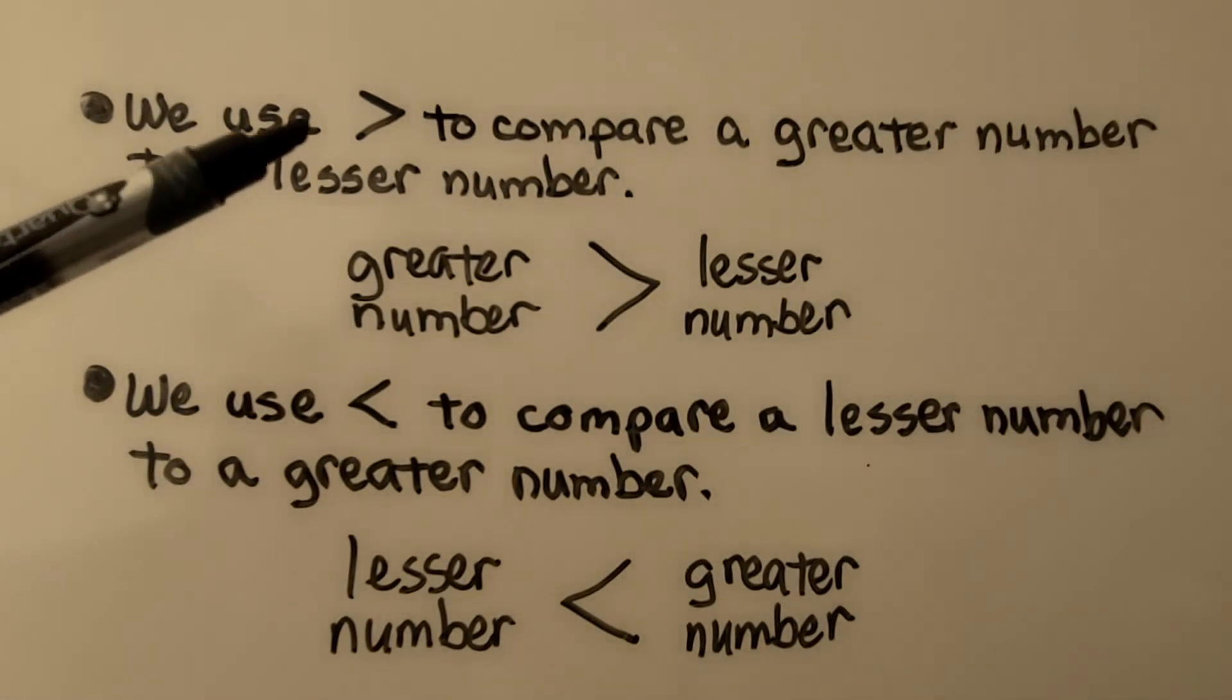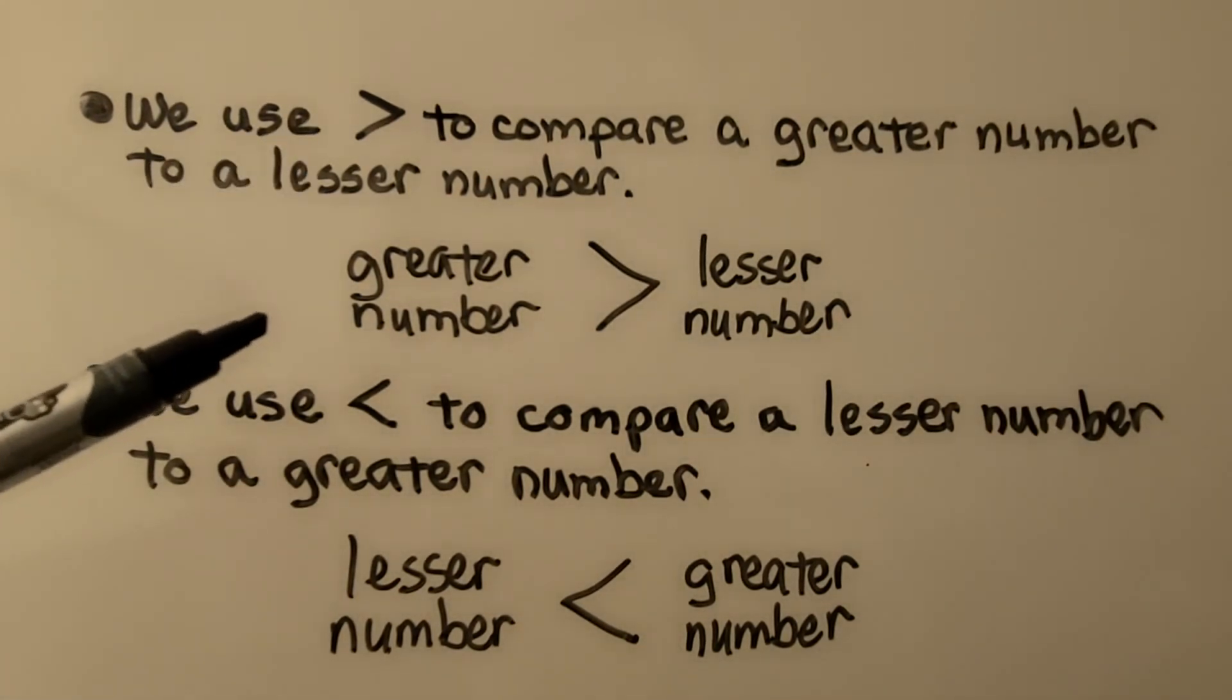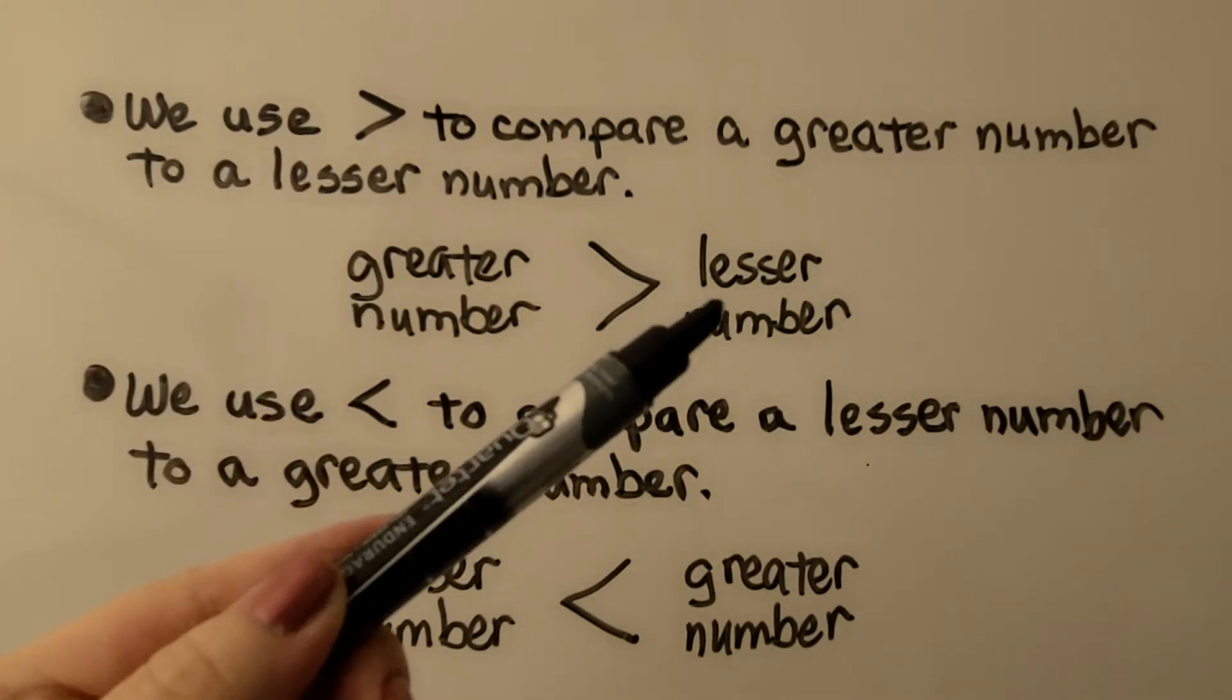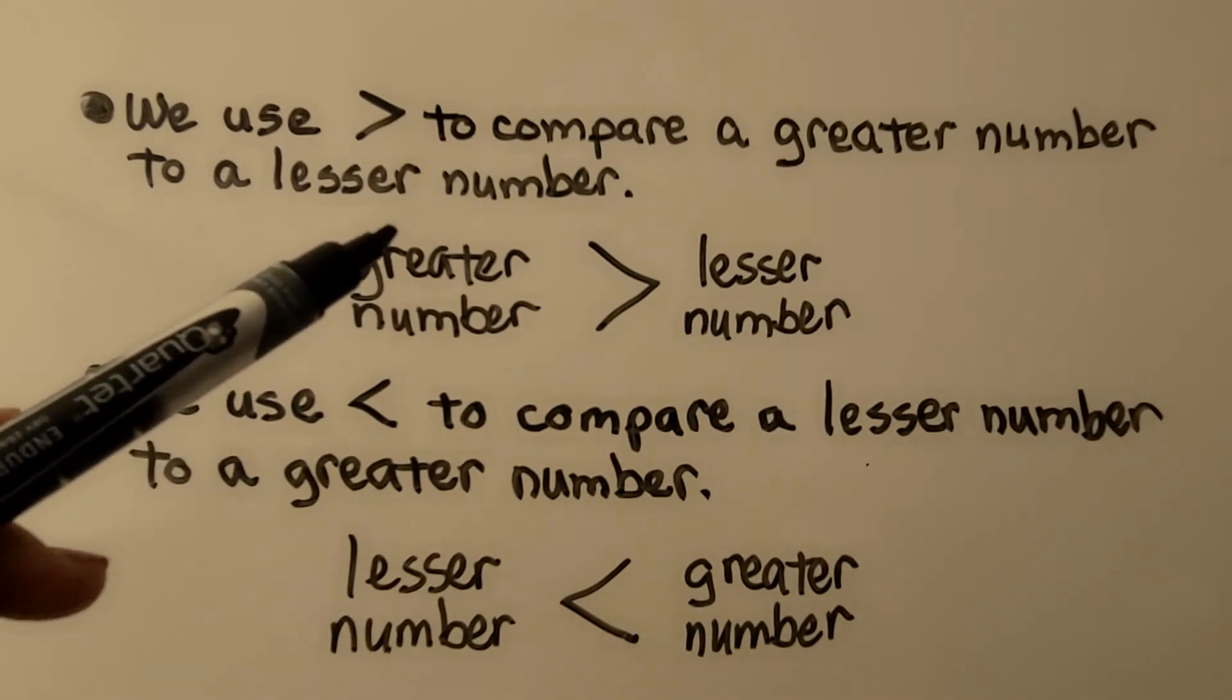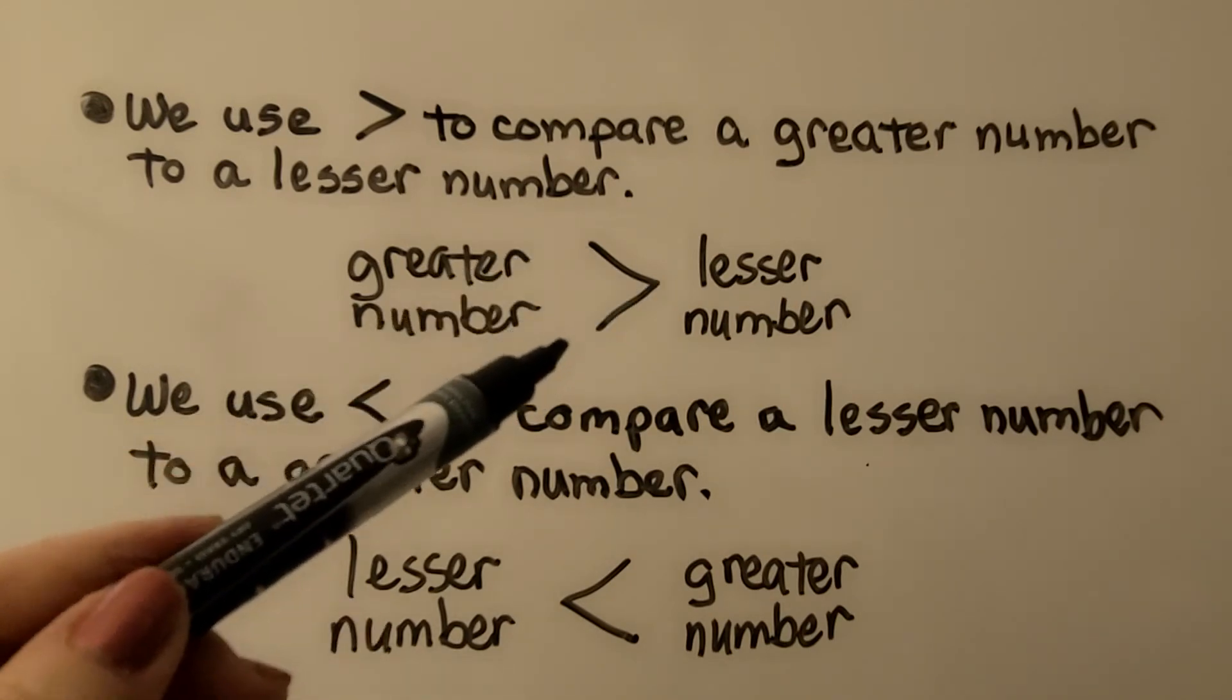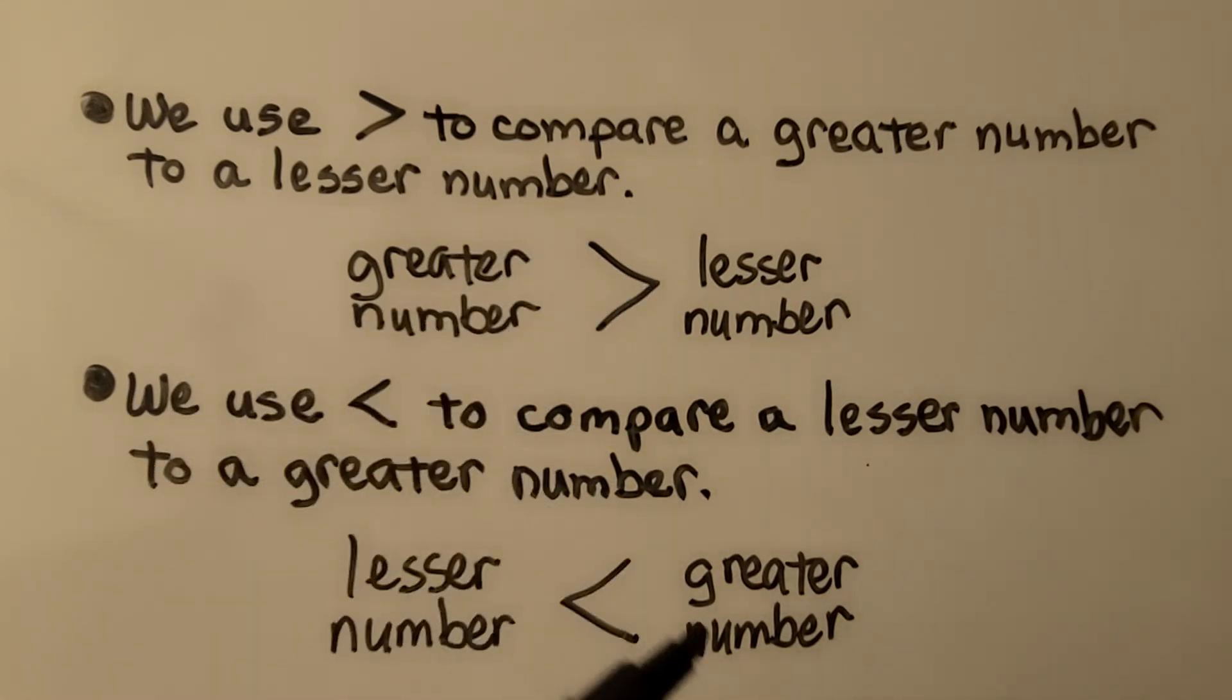We use the is greater than symbol to compare a greater number to a lesser number. We use an is less than symbol to compare a lesser number to a greater number. So if you look, the greater number is over here and we've got the greater than symbol. Now that the greater number is over here, our symbol flipped. We traded places with the numbers and our sign flipped the other direction.